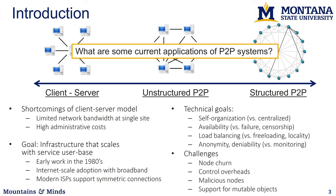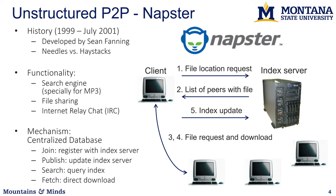So what are some current applications? We talked about it in terms of unstructured and structured peer-to-peer. For unstructured, we had things like BitTorrent and basically lots of file-sharing things, but there were other types of middleware as well, which we'll cover.